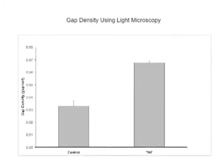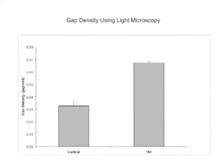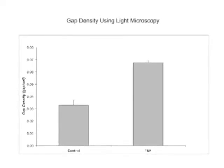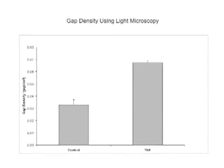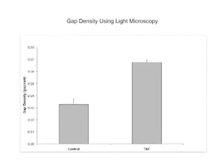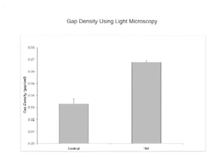Similarly, light microscopy determined epithelial gap density was two-fold higher in the TNF-treated mice as can be shown in this next figure. The gap density difference observed between confocal laser microscopy and light microscopy was due to the three-dimensional and two-dimensional nature of the image analysis.